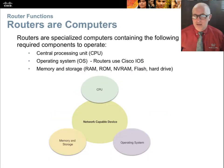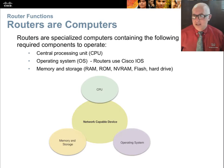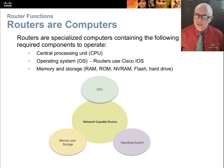Routers are computers too. They have CPUs, RAM, and storage. They use NVRAM — non-volatile RAM — for storage, and flash as basically a hard drive. They run an operating system that is customized, much like the operating system on a smartphone — an Android, Windows, or Apple iPhone — it's a full operating system optimized to work on that device. Similarly, a router has a full operating system, but it is optimized to do routing.